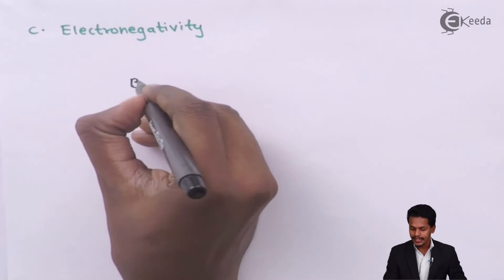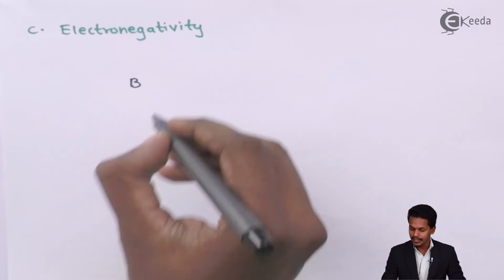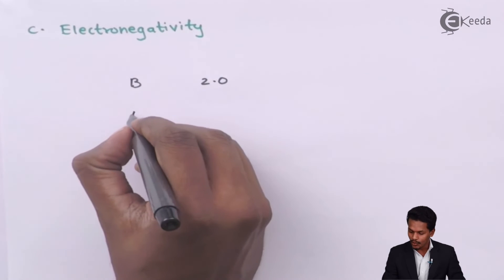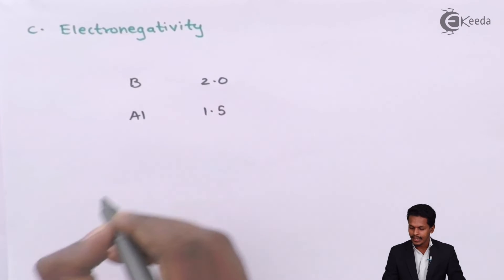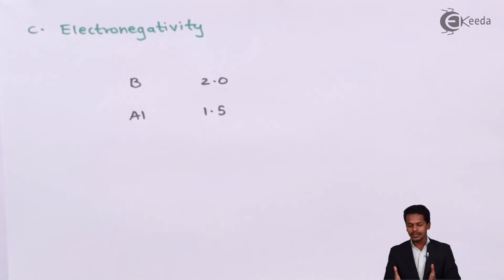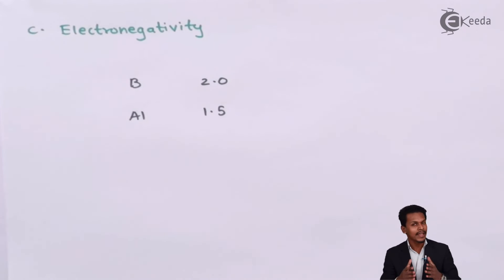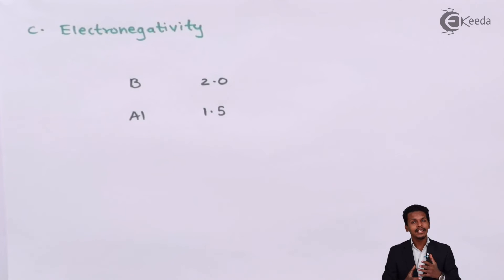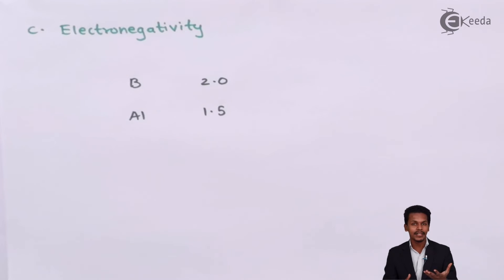For Boron, the electronegativity has been calculated to be 2.0, and for Aluminium it is 1.5. As we move from top to bottom along a group, the atomic size goes on increasing, and we expect the electronegativity to also decrease. The reason is that electronegativity depends upon the size — the smaller the size of an atom, the higher the electronegativity.